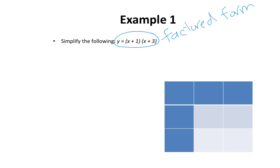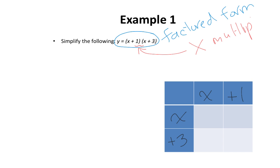I'm going to take those terms and put them in the chart below. So that's x, and I'm going to put plus 1 over here. My next binomial is x plus 3. It's really important that you pay attention to these signs. Remember that we are multiplying binomials — there is no operation between the two brackets, which corresponds to multiplication.